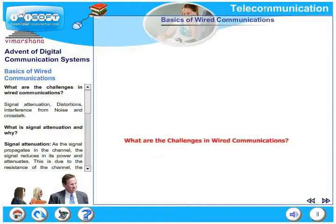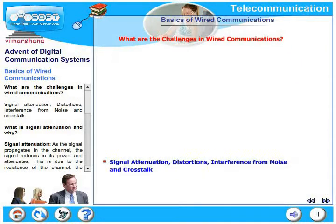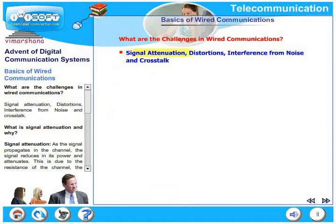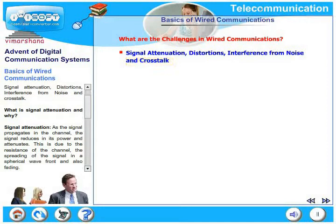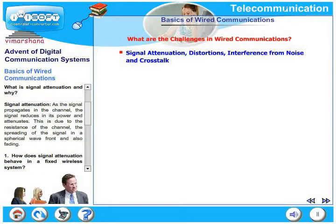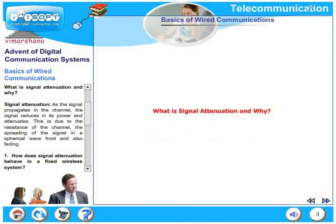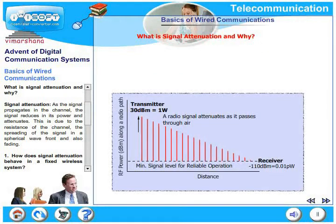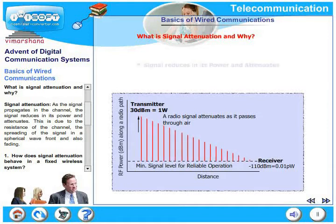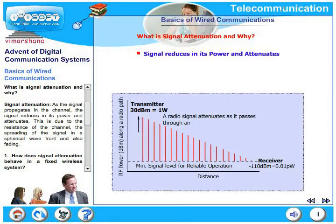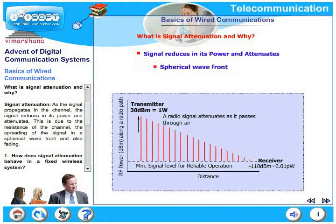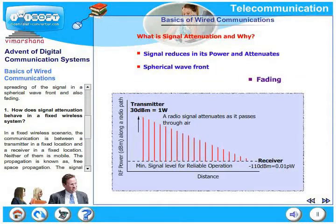What are the challenges in wired communications? Signal distortion, signal attenuation, interference from noise, and cross talk — these are some of the challenges in wired communications. Signal attenuation means that as a signal propagates in the channel, it reduces in power and attenuates. This is due to the resistance of the channel, the spreading of the signal in a spherical wave front, and also fading.